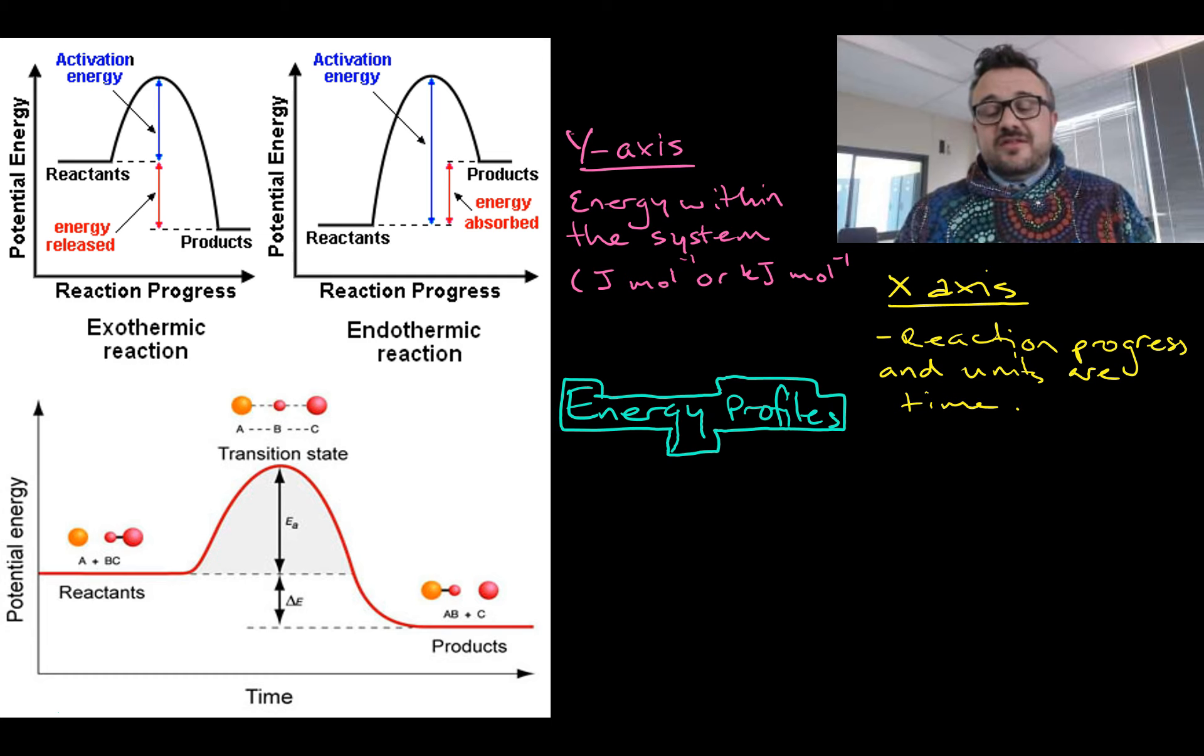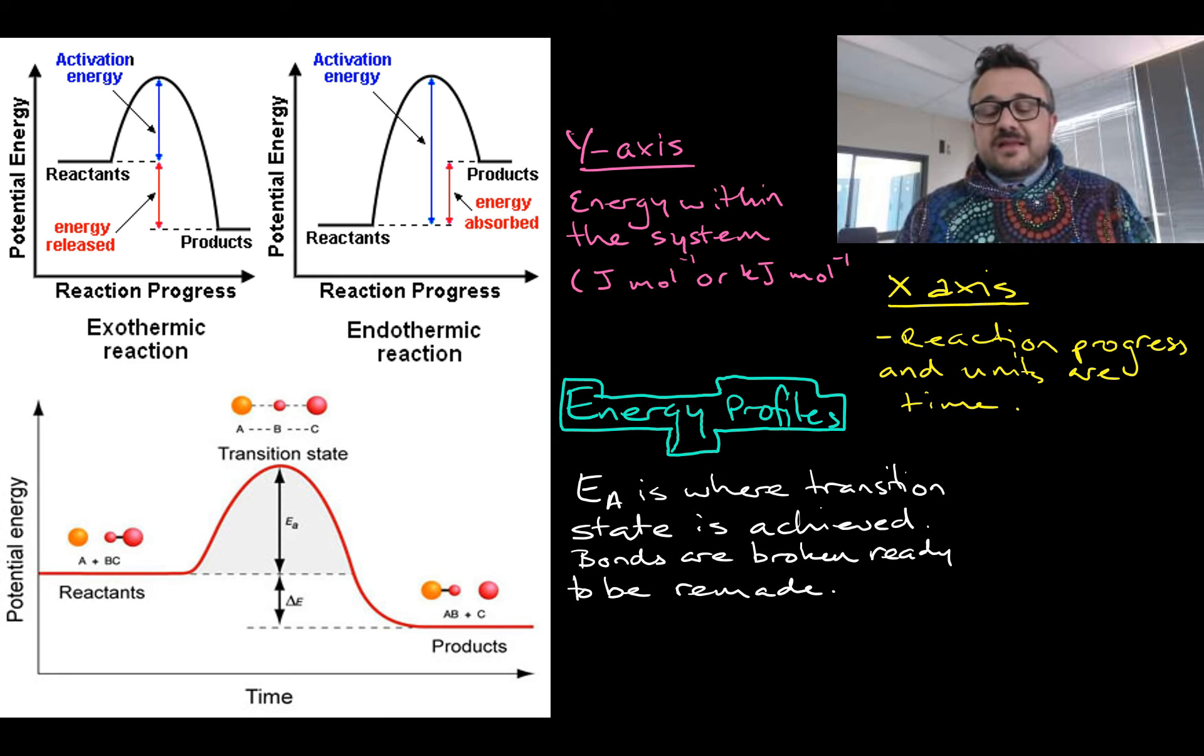The activation energy is where that transition state is achieved. So we can see over here we have our A and BC compound, and when they reach the transition state, they've been broken into separate species, separate atoms, and then they're ready to be remade. And this is always an exothermic process, so to break bonds we always have to put energy in.